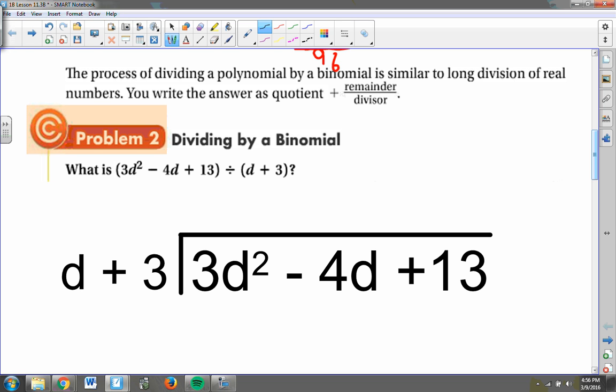The process of dividing polynomial by a binomial is very similar to what we just did. You will write the answer like this: it will be all of your quotients, plus, and then your remainder goes on top of a fraction with the stuff you are dividing by on the bottom of the fraction.